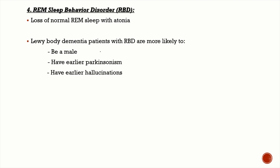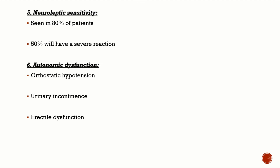REM sleep behavioral disorder is very important — it precedes the dementia by several years. Patients have loss of normal REM sleep atonia. Patients with Lewy body dementia who have RBD are very likely to be male, and are likely to have earlier parkinsonism and earlier onset of neuropsychiatric syndrome.